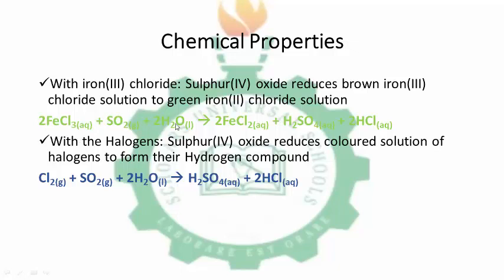FeCl3 plus SO2 in the presence of water forms FeCl2, which is a green (dirty green) solution, and SO2 is oxidized to H2SO4. SO2 is oxidized to H2SO4 whenever it acts as a reducing agent. With halogens: SO2 reduces a solution of chlorine to form hydrogen chloride gas or hydrochloric acid. The oxidation number of chlorine is reduced from 0 to minus 1, while sulfur increases from plus 4 in SO2 to plus 6 in H2SO4.